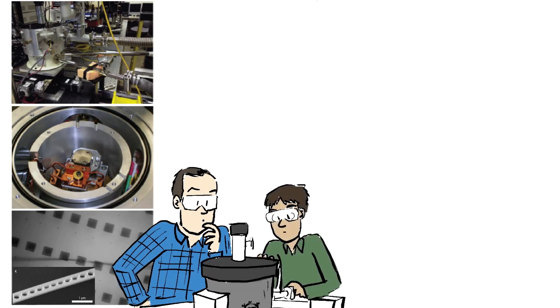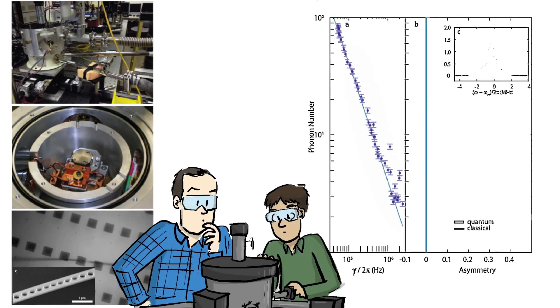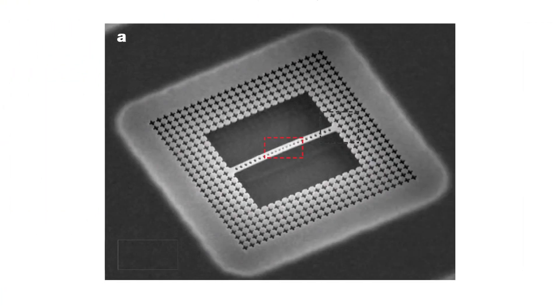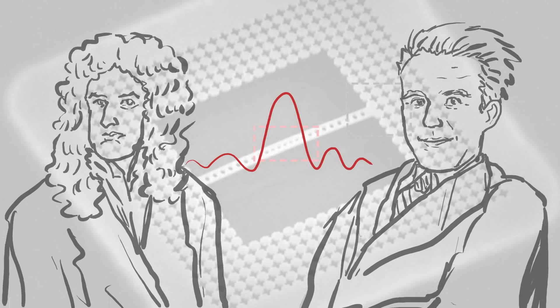And so we did the experiment, and what we found, sure enough, once it got cold enough, we saw that the blue basically went away faster than the red, and we were left with just a large asymmetry between these two sidebands, which is an indication that for these, even these macroscopic objects, that quantum mechanics rules the day, and classical physics is actually not an appropriate description, that it's fundamentally a quantum object.